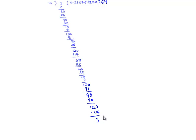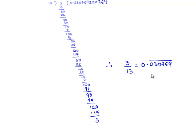When we go on solving, the remainder repeats itself. Therefore, the digits 2, 3, 0, 7, 6, 9 are repeating. Hence, the decimal expansion for 3 by 13 is equal to 0.230769 bar. The decimal expansion is non-terminating but repeating.